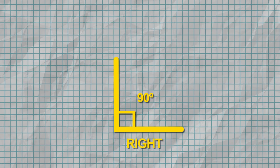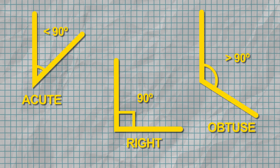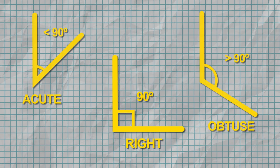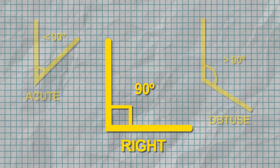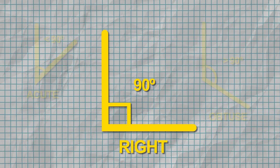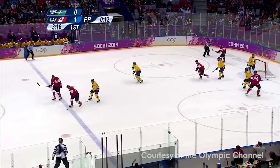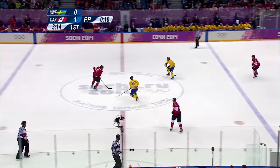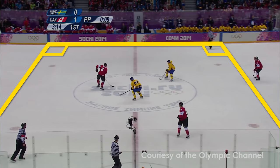There are three main types of angles: right, obtuse, and acute. A right angle measures exactly 90 degrees, or a quarter of a circle. Right angles are easy to spot on the hockey rink because they form the corners of all rectangles and squares.